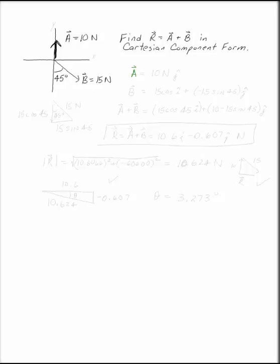First thing you have to do is write each of your vectors in Cartesian form. A is easy. That's 10 Newtons in the J direction. It's already up. So A is just 10 Newtons in the J direction.